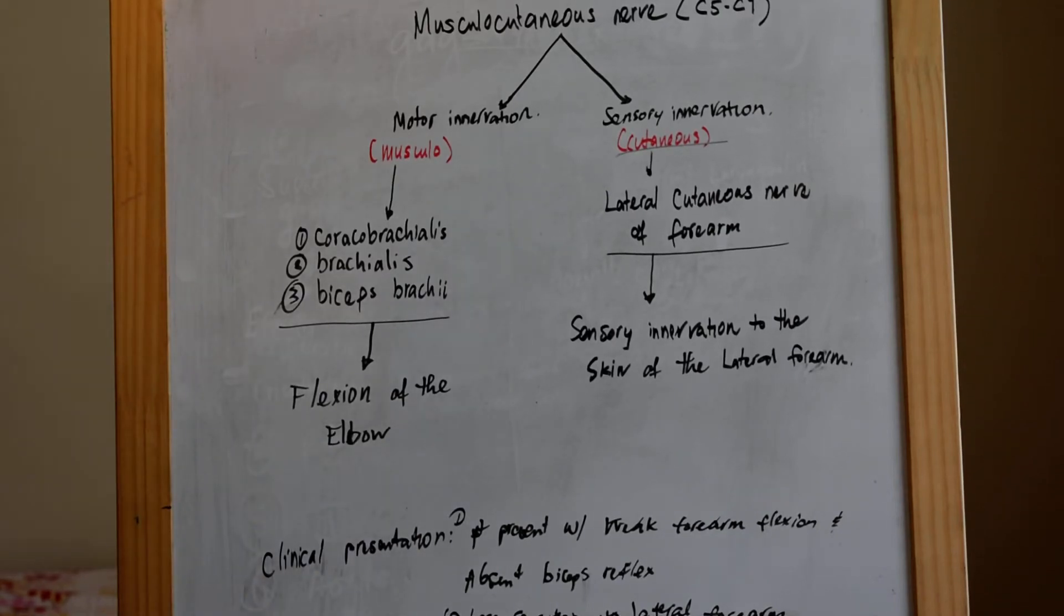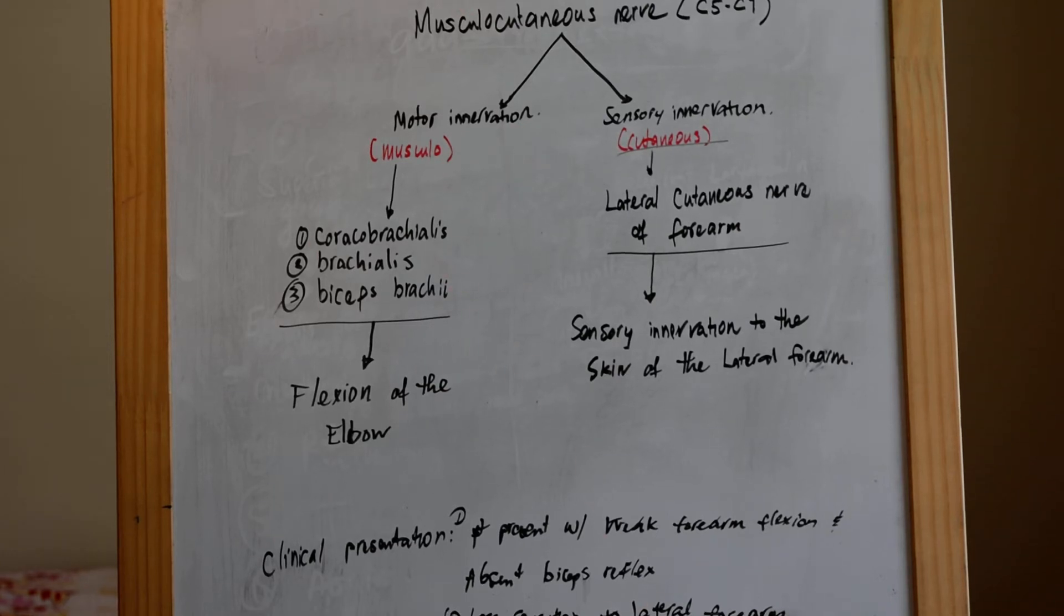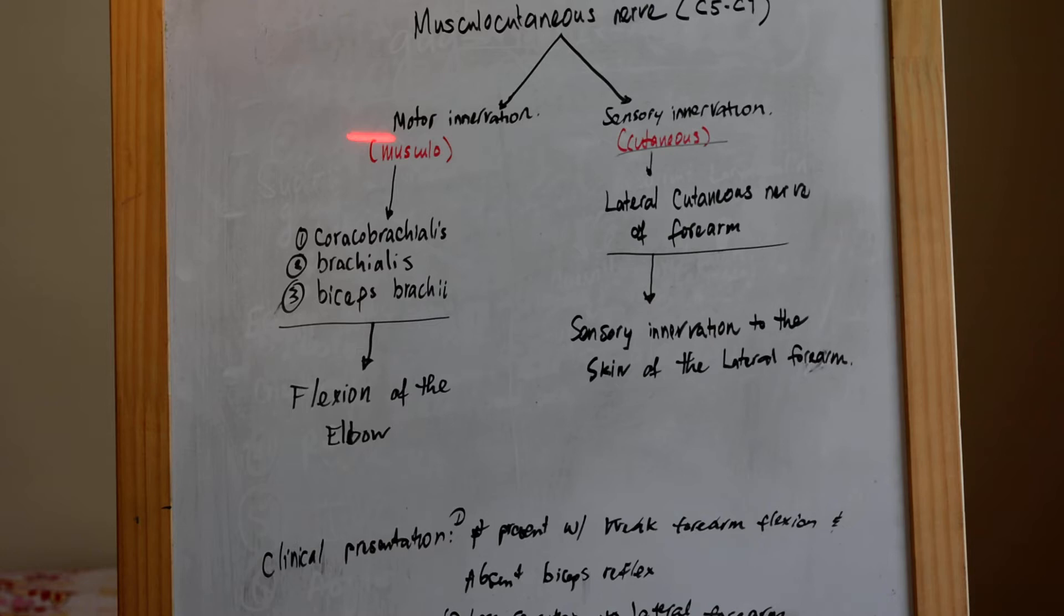Innovations of the musculocutaneous nerve. The musculocutaneous nerve is derived from the C5 through C7 ventral rami, and as the name implies, it has both motor and sensory, somatic sensory innovations.